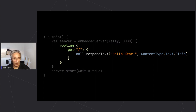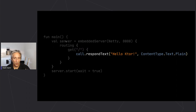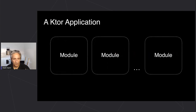Once we define the server, we then define a route — this is part of the DSL aspect of Kotlin. We're saying we're going to define routes, and inside that we define a single route: a GET on the home page, slash. When someone makes a call to that, we respond with 'Hello Ktor' and set the content type to text/plain. If we were to run this it will open in the browser and respond with 'Hello Ktor'.